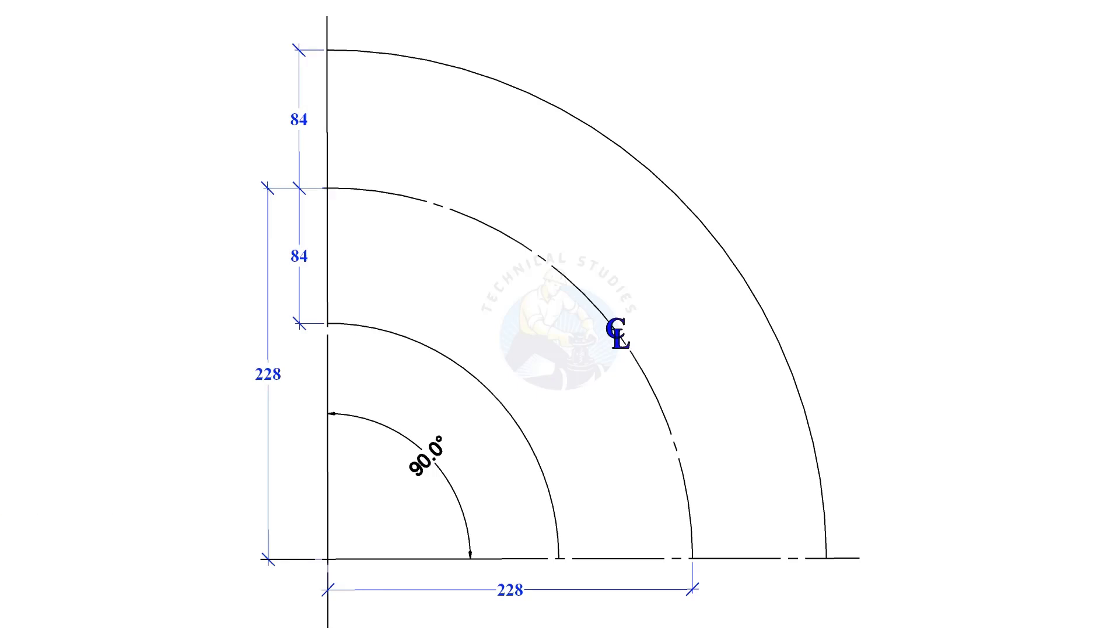For the sample we will use a 6-inch diameter pipe. Outer diameter of a 6-inch pipe is nearly 168mm.